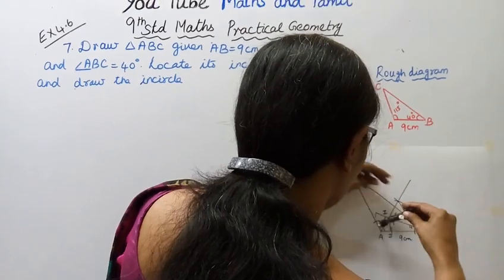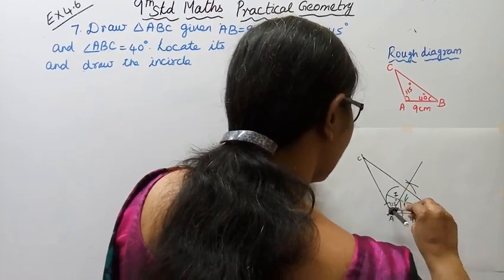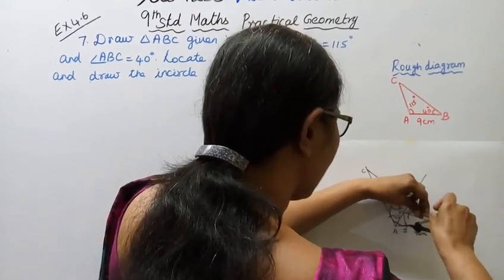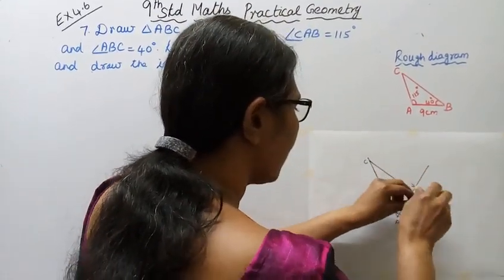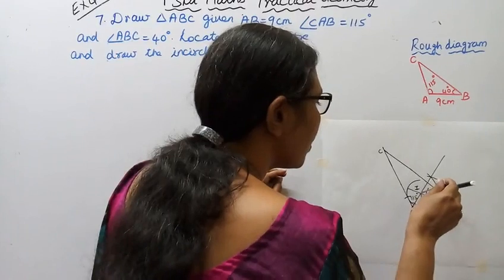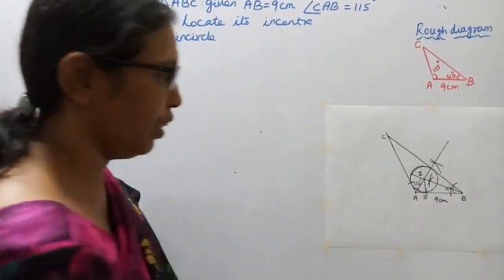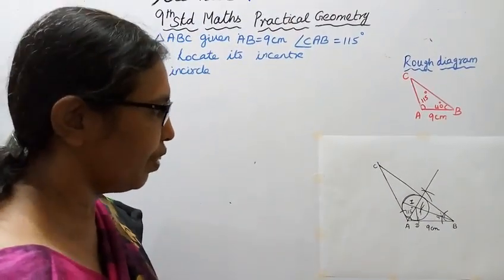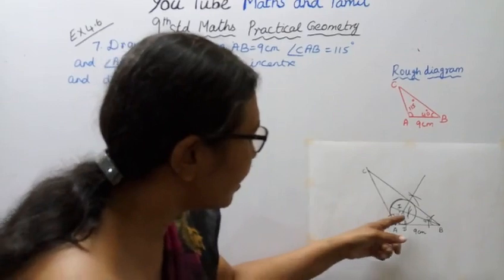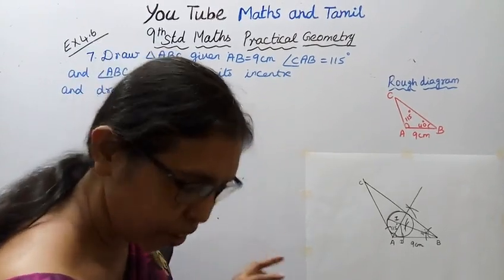Measure the perpendicular distance from the incenter I to any side of the triangle. Make sure the measurement is correct. Draw the inscribed circle using that radius, making sure it is perfectly constructed.